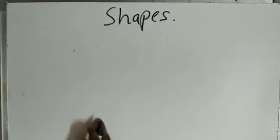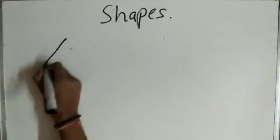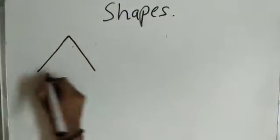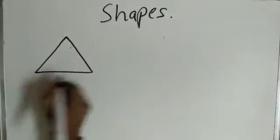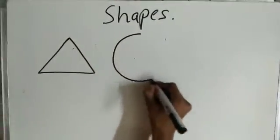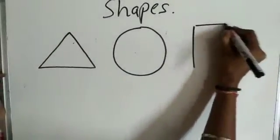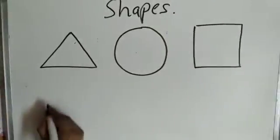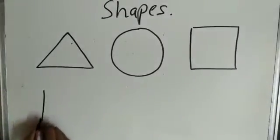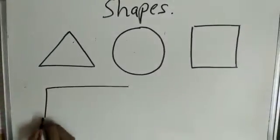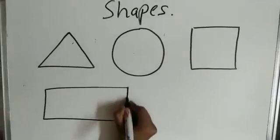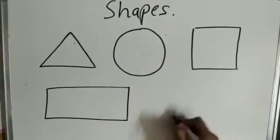So first of all, we will see what is triangle. Triangle, then circle, then square, then rectangle, then star.